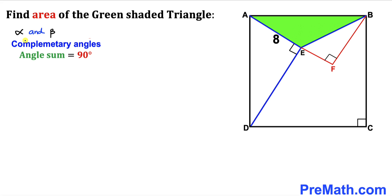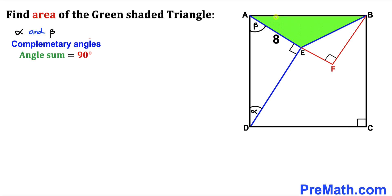Let's assume alpha and beta are two complementary angles — that is, alpha plus beta equals 90 degrees. Angle DEA is labeled alpha. Since that angle is 90 degrees, the remaining angle must be beta. And since the whole right angle is 90 degrees with beta accounted for, the other piece must be alpha.